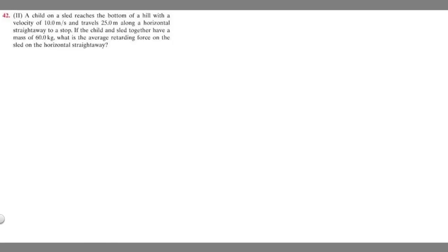In this problem, we're told a child on a sled reaches the bottom of a hill with a velocity of 10 meters per second and travels 25 meters along a horizontal straightaway to a stop. The child and the sled together have a mass of 60 kilograms. What is the average retarding force on the sled on the horizontal straightaway?